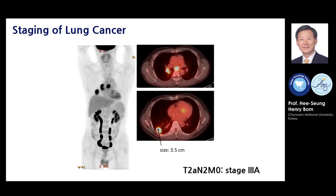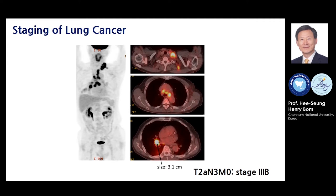This patient has a lung cancer in the right lower lung. The tumor has spread to hilar and subcarinal lymph nodes; therefore, the stage is T2A, N2, M0, Stage 3A. In another case, a lung cancer in the right lower lung spreads to hilar, mediastinal, and contralateral supraclavicular lymph nodes. The stage becomes T2A, N3, M0, Stage 3B.